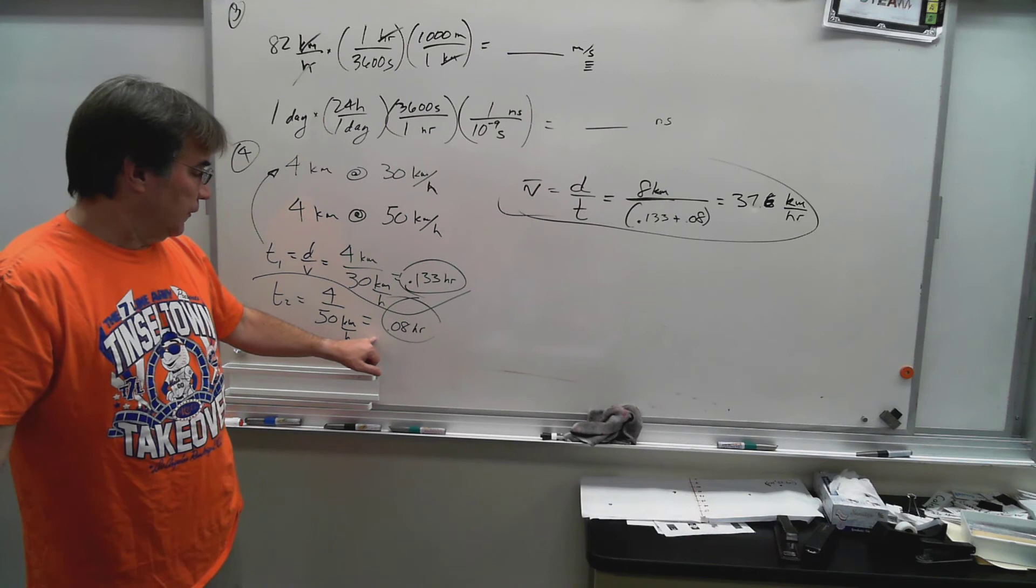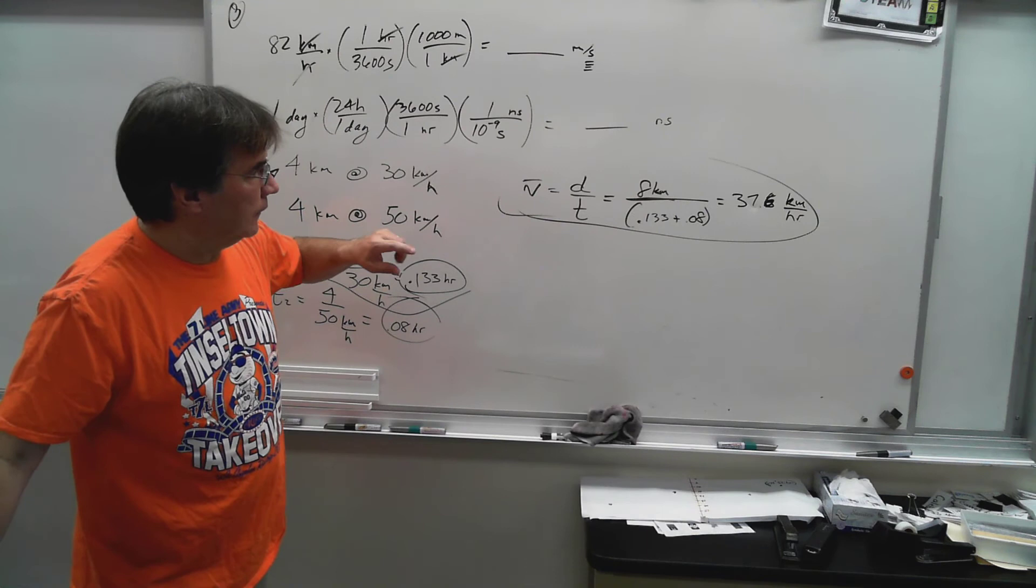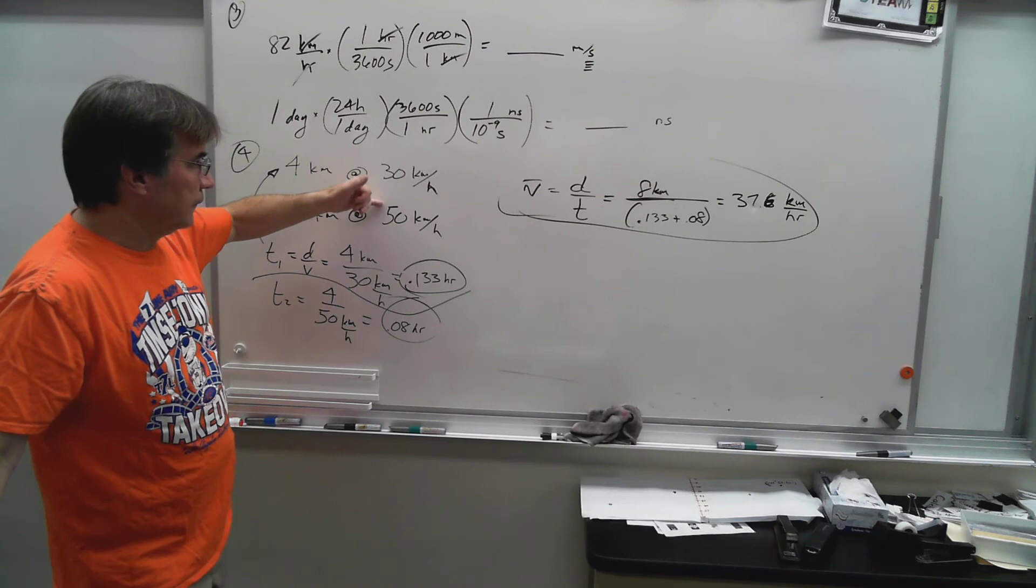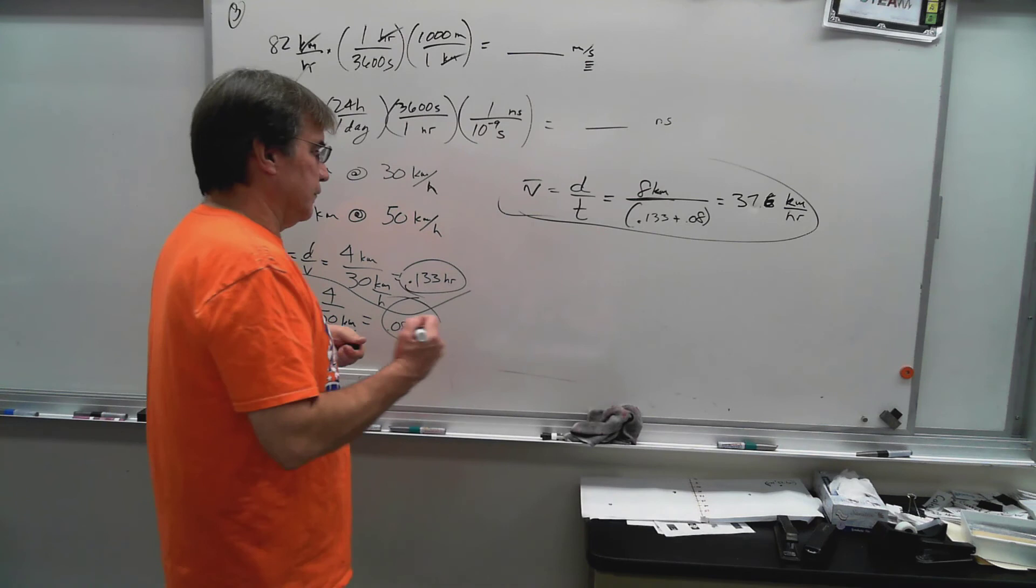Or think of it the other way, you spend a lot less time doing the faster speed. So it ends up you get an average coming out below 40, below the middle of these two, because you spend a lot more time.